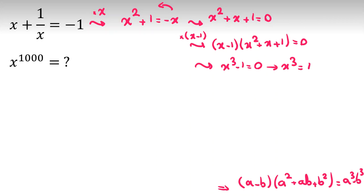Now, I want to calculate x to the 1000. It will be x to the 999 times x to the 1. x to the 999 is x cubed to the 333 times x to the 1. This one, because x cubed is 1, it will be 1, so it will be x. So I should find x.